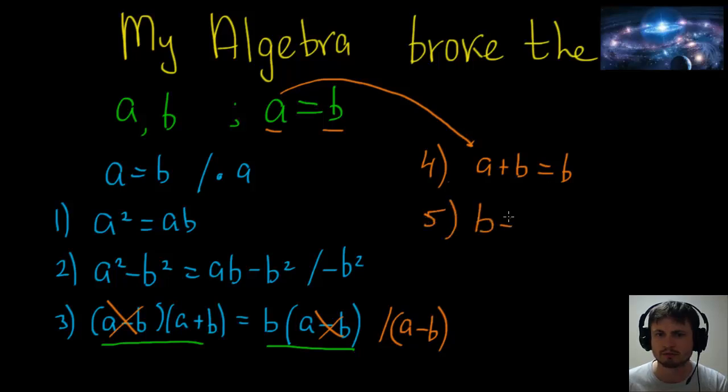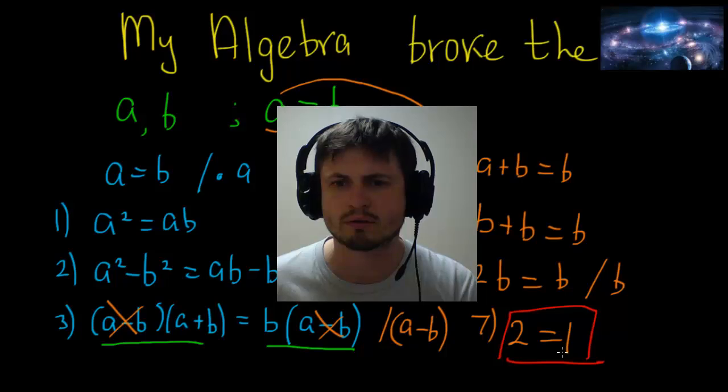And that's 2b equals b. Oh, and then if I divide this by b, I'm going to get 2 equals 1. What? 2 equals 1? 2 equals 1? Oh no, I think I broke the universe. Help!